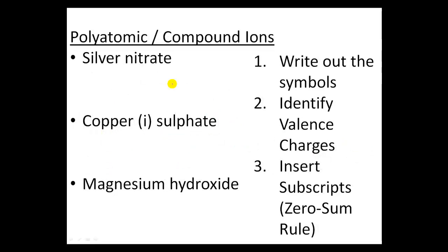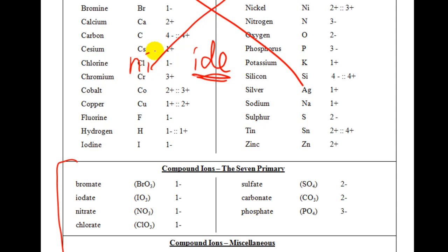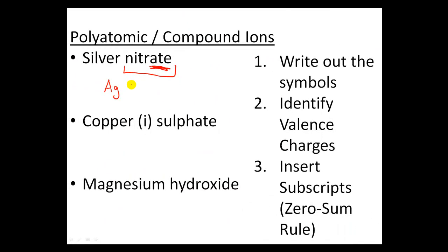Now let's take a look at writing the chemical formulas for these polyatomic ions. The first step is to write out the symbols. We have silver, so I write down the symbol for silver: Ag. And I see nitrate. As soon as I see nitrate with an -ATE suffix, I know that I need to look down here on my valence sheet, not up here, because that area ends with -IDE — if it had been up there, it would have been called nitride. But it was nitrate, and as you can see, nitrate is right here: symbol NO3, 1- charge. I put brackets around the NO3 to remind myself that this is a polyatomic ion — a group package — and that these atoms have a total of 1- charge altogether.